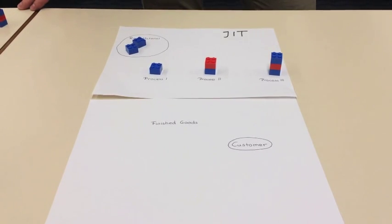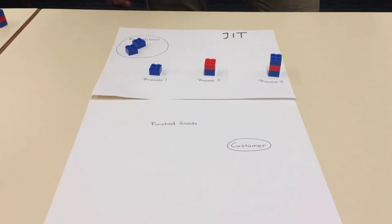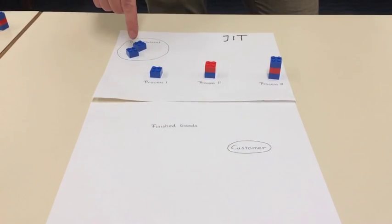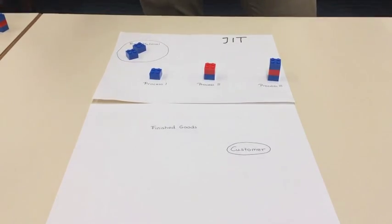With a pull system, the manufacturing process would look like this. Based on actual demands, goods are being produced. Therefore, inventory is significantly reduced. Finished goods are replenished as soon as they are delivered to the customer.